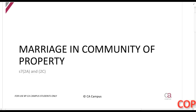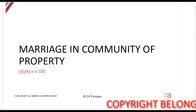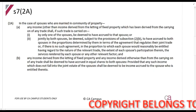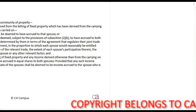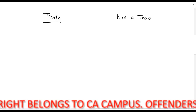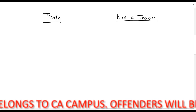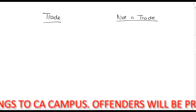We are now going to talk about the income tax implications of being married in community of property, which is discussed in section 7.2A and section 7.2C. Before I get into the detail, I want to talk about what is a trade and what is not a trade. This is just a bit of revision from when you studied the general deduction formula.